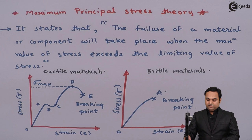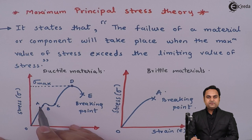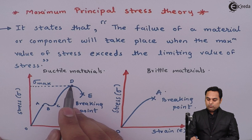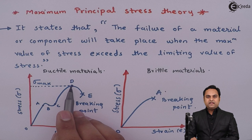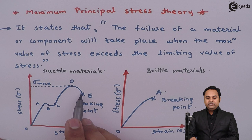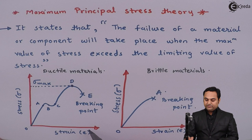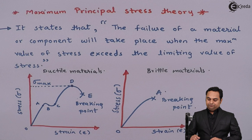In the first graph, that is for ductile materials, when we are increasing the stress, strain also increases. There is a point in this graph, that is point D, where we have the maximum value of stress. After the maximum stress has been reached, there is a region from D to E in which even if the stress goes on decreasing, the strain value increases. Finally, at point E, the material breaks.